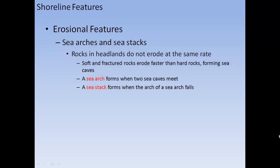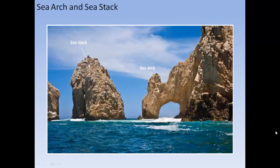Rocks in headlands do not erode at the same rate. Soft, fractured rock erodes faster than hard rock, forming sea caves. A sea arch forms when two sea caves meet. A sea stack forms when a sea arch collapses. So a headland is first eroded into a cave, then through to a sea arch, and eventually becomes a sea stack.